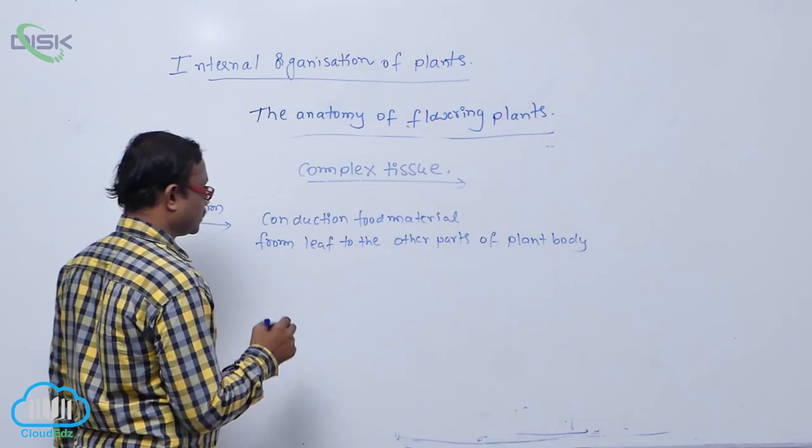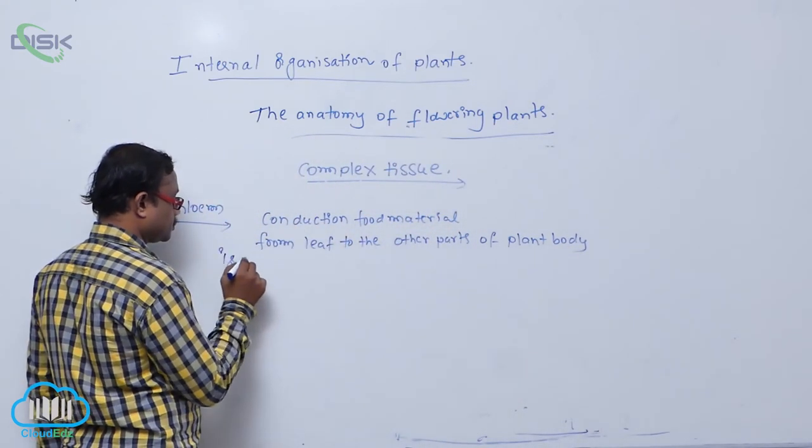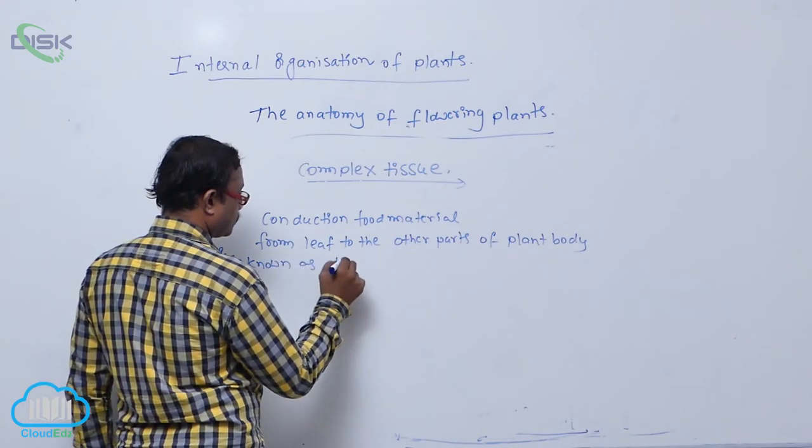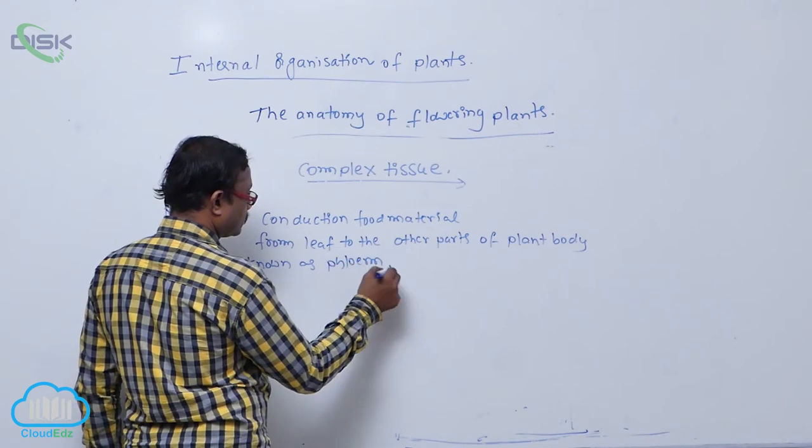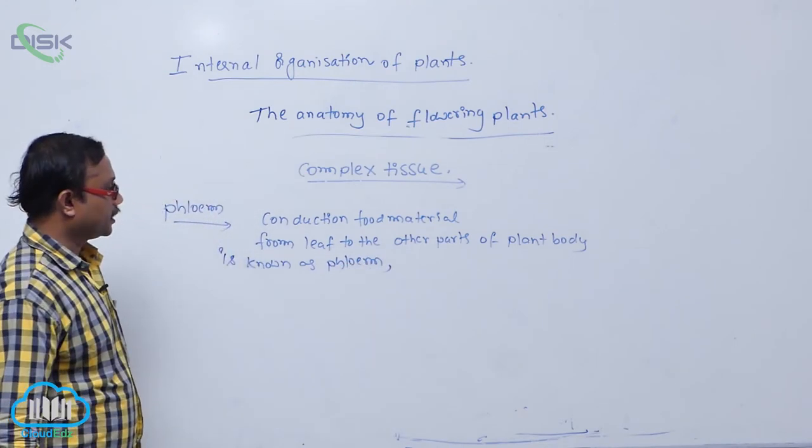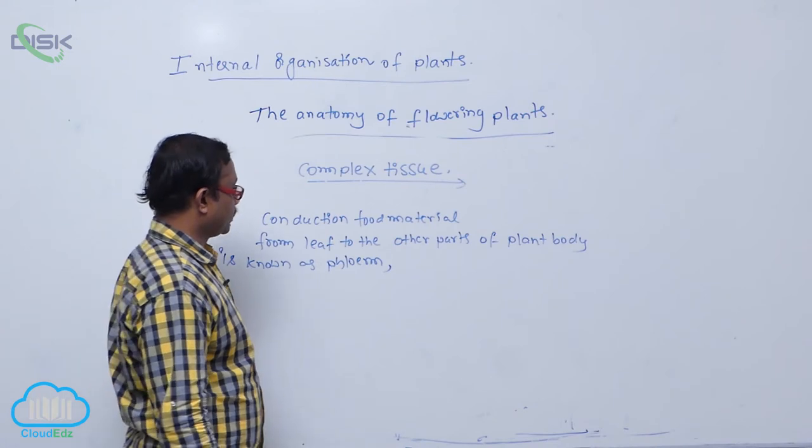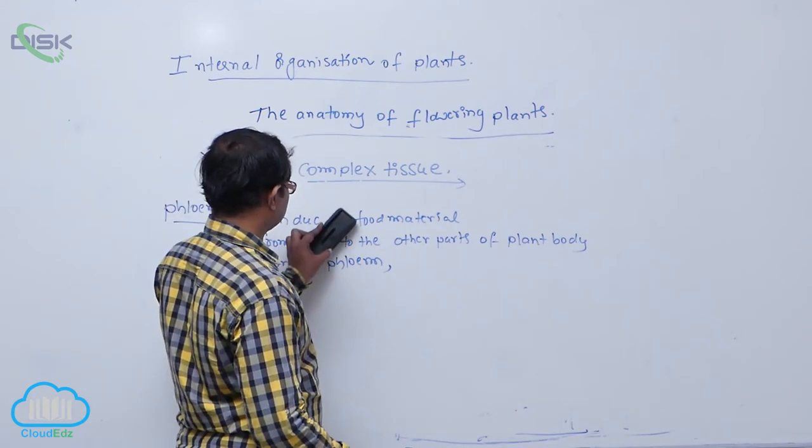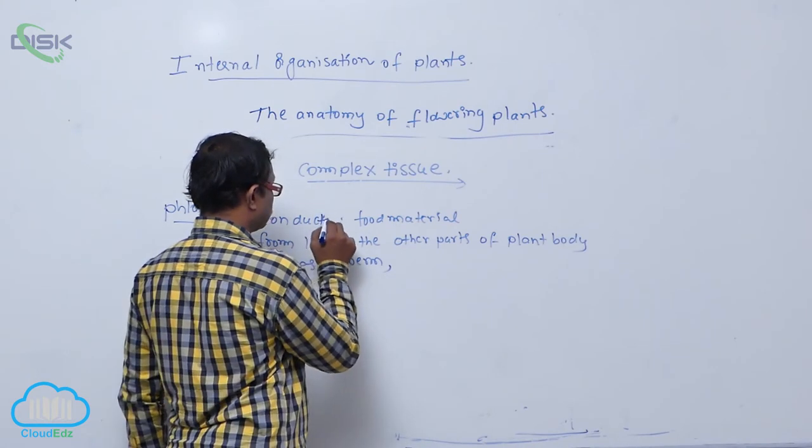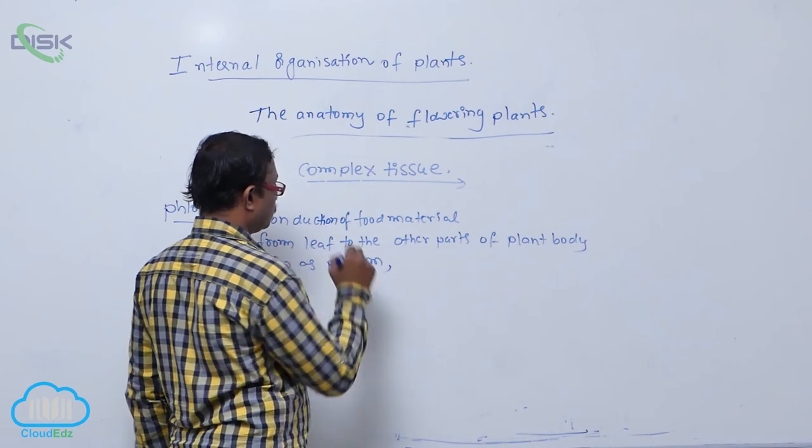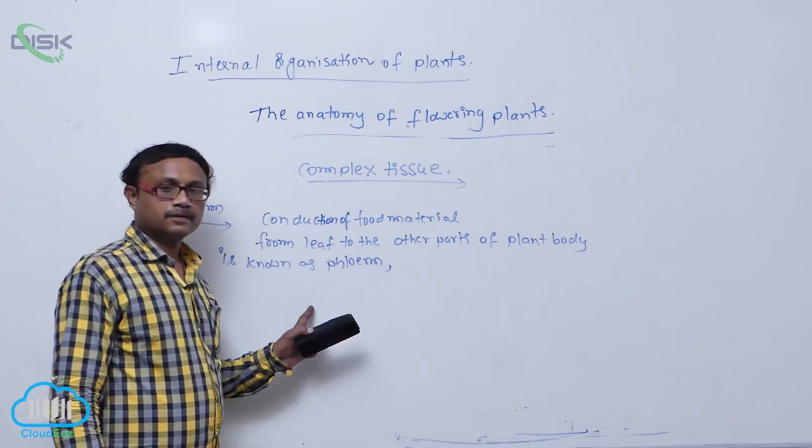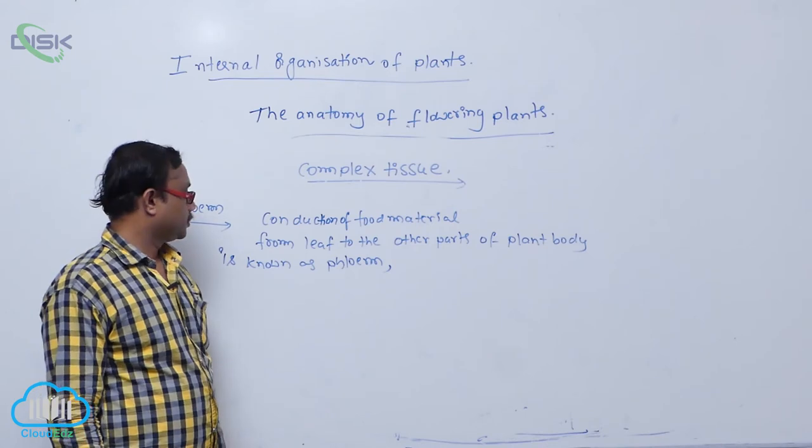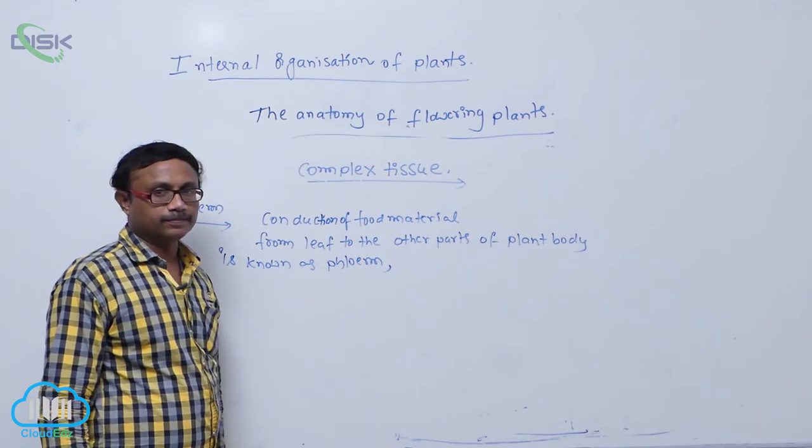Is known as phloem. Conduction of food material from leaf to the other parts of plant body is known as phloem.